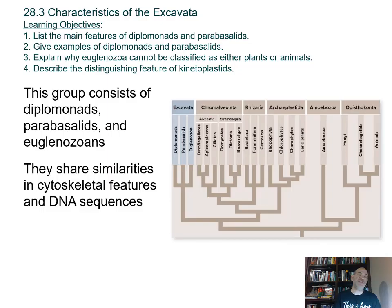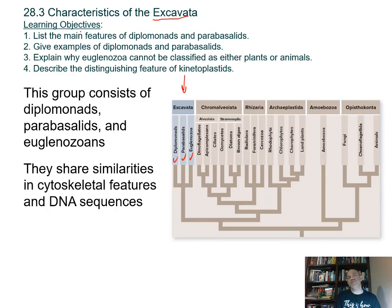In this section, we'll look at the supergroup Excavata, which includes three subgroups: the diplomonads, the parabasalids, and the euglenozoa. The learning objectives for this section include listing the main features of diplomonads and parabasalids, giving examples of each, explaining why euglenoids cannot be classified as either plant or animal — those mixotrophs mentioned in the prior section — and describing the distinguishing features of kinetoplastids.